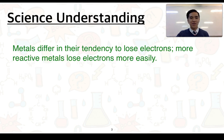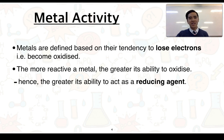This ties in with our first science understanding: metals differ in their tendency to lose electrons, and more reactive metals lose electrons more easily. We know that metals can differ in their reactivity, and specifically this is based on their tendency to lose electrons. When things lose electrons, they become oxidised, so metals can be defined based on their ability to be oxidised. This is what we call the metal activity or its reactivity. The more reactive a metal, the greater its ability to oxidise.